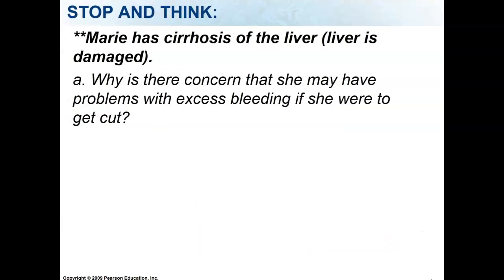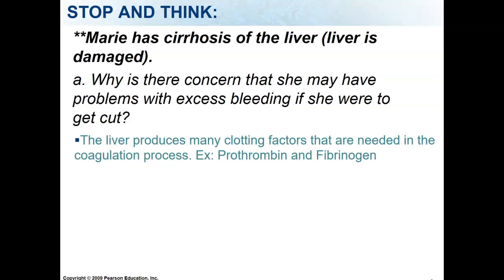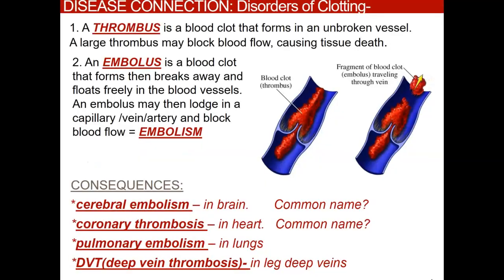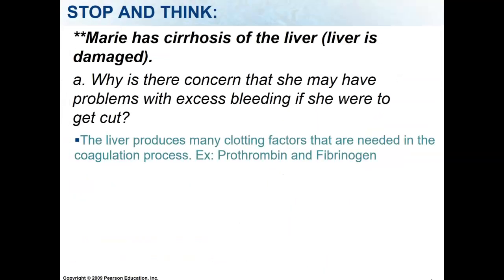Marie has cirrhosis of the liver — her liver is damaged with a lot of dead cells. Why would there be a concern that she would have problems with excess bleeding if cut? The liver produces all of the clotting factors needed for the coagulation process, such as prothrombin and fibrinogen. If your liver is damaged, you're not going to be able to produce the clotting factors that your body needs.